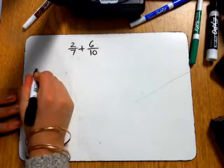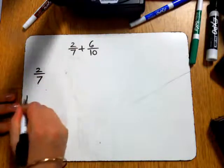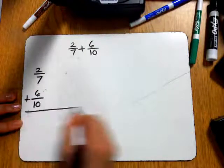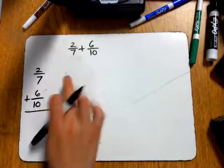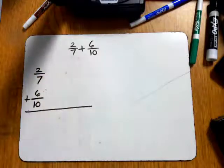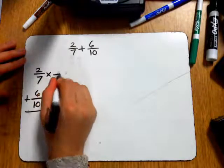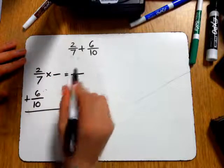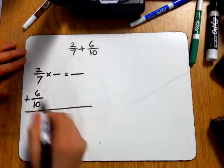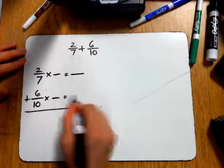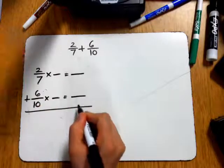So I'm going to write it 2/7 plus 6/10. And then I always leave a bigger line because this is where I'm going to show my work. I know that 2/7 times a super 1 of something is going to give me an equivalent fraction. 6/10 times a super 1 of something will then give me an equivalent fraction.